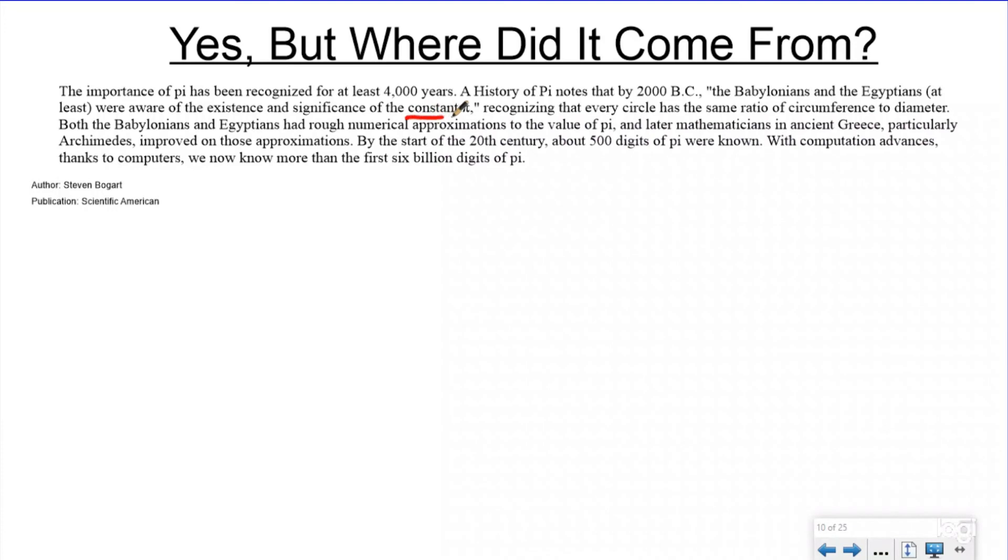We call pi a constant, because it's not a variable. A lot of times we use shapes and letters to be variables, which means it can change based on the equation, based on the expression. Pi is a constant. Anytime you see that symbol, it's 3.14159267, whatever all the numbers are, but really 3.14 is what typically is a math convention that you're going to use. And so it's always that. That's what constant means.